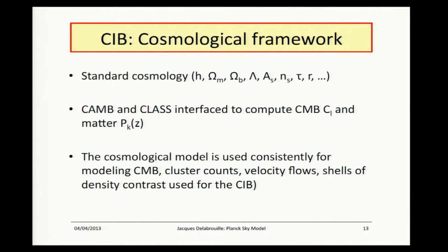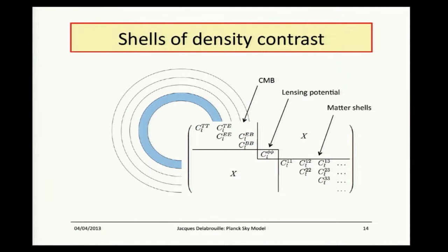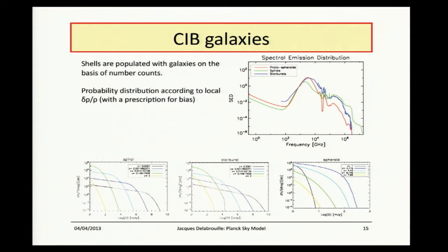Let me move to the CIB. The CIB is modeled within a cosmological framework with standard cosmology and cosmological parameters. The CLASS code is used to compute CMB C_l and also matter P(k) as a function of redshift, and to compute the density contrast on shells of different redshift. This cosmological model is used consistently for modeling CMB, cluster counts, velocity flows, and shells of density contrast used for the CIB. We start with a big covariance matrix — actually power spectra — the power spectra of CMB, for which we have SEDs that will be redshifted as a function of redshift, and a distribution of light for each type of population.